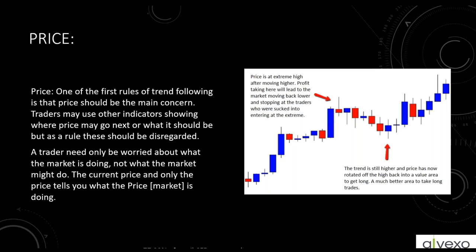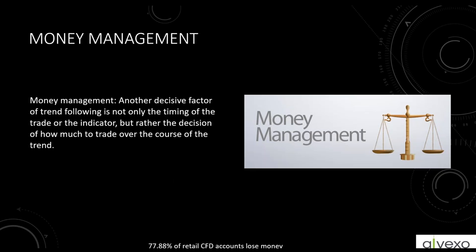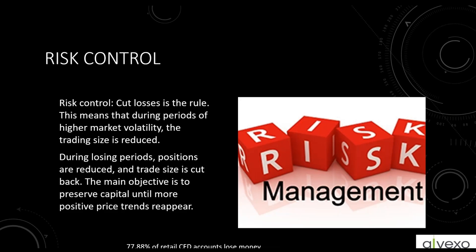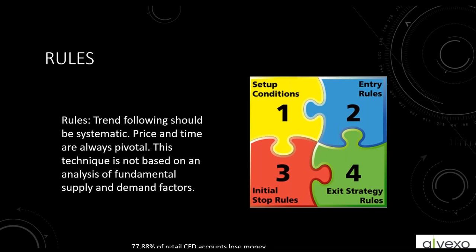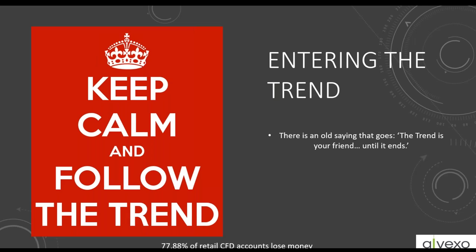The first rule of trend following is that price should be the main concern. Traders may use other indicators showing where price may go next, but the trend — the price movement — should never be secondary. Money management is another key factor: it's not just the timing of the trade or indicator, but the decision of how much to trade over the course of the trend. Risk control means cutting losses — during periods of higher market volatility, trading size should be reduced, and during losing periods, position sizes should be cut back. Remember: trend following should be systematic; price, time, speed, and momentum are all pivotal.